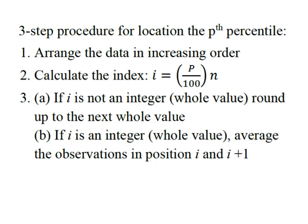First thing is there's a three-step procedure for locating any percentile, decile, or quartile. We're going to arrange the data in increasing order from smallest to largest. Then we have to calculate an index. An index simply points us to the data set to look for an observation that is located in the index location.